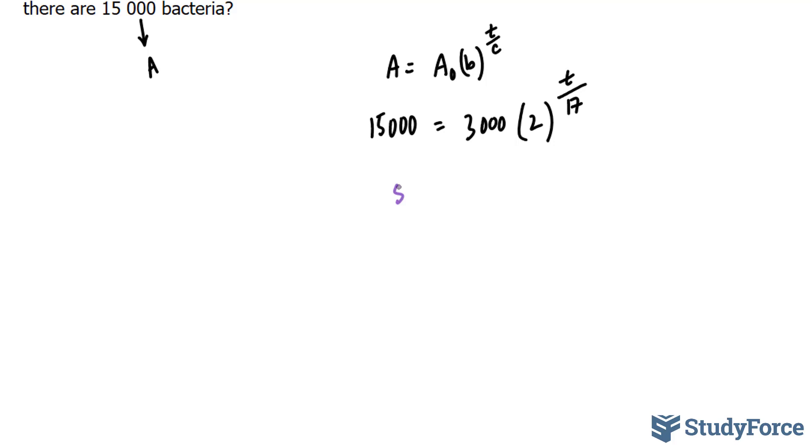15,000 divided by 3,000 is equal to 5. And 3,000 over 3,000 is 1, so it cancels out. We end up with 2 to the power of t over 17.